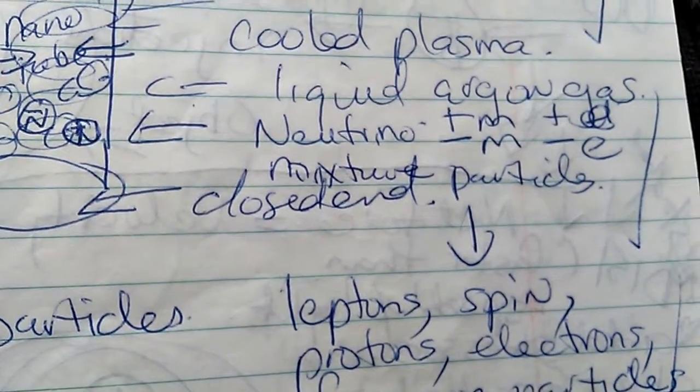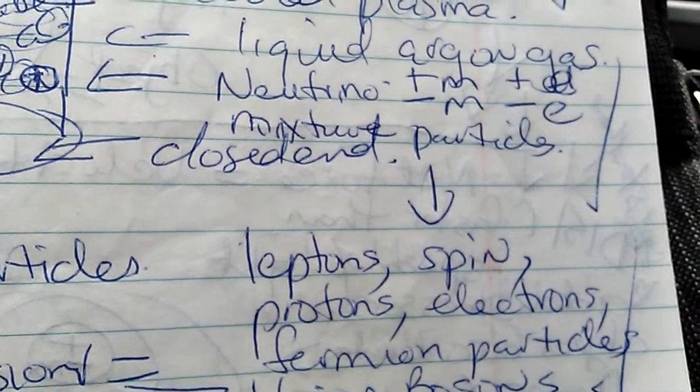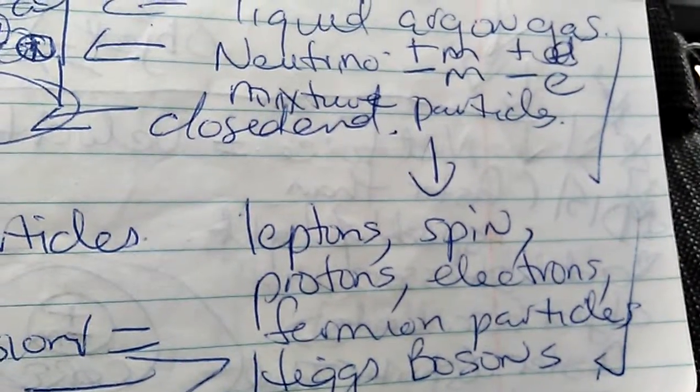And it goes to leptons, spin, protons, electrons, fermion particles, and Higgs bosons.